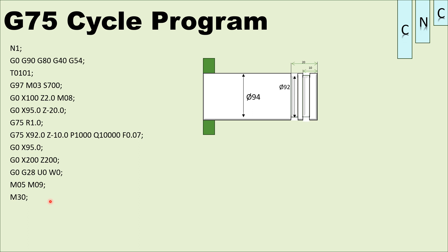In the basic program, you have to write many blocks with lots of editing. But in the G75 cyclic program, you only need two passes in two lines. This reduces the number of blocks significantly and program editing becomes much easier.